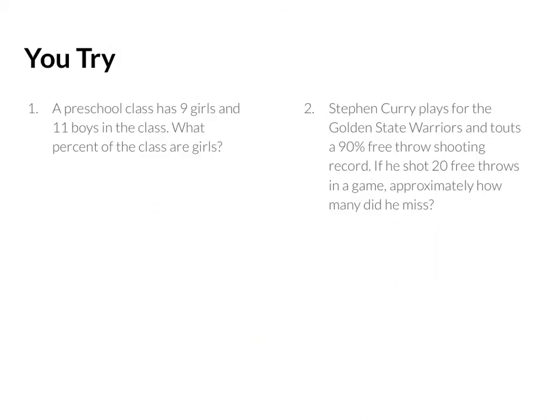Now it's time for you to try two problems. Pause, try the problems, then play and check your answer. If you're not sure how to start a problem, play it a little bit, watch how I set it up, and then rewind and try it on your own again. Remember, when we're setting up percent ratios, we're comparing the part to the whole and the percent to 100, because those are going to be proportional or equivalent ratios.